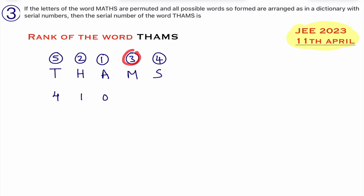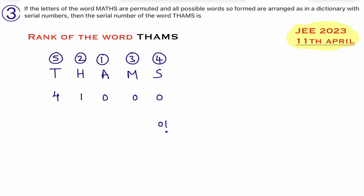For the letter with number 3, observe the right side — how many numbers are smaller than 3? No number is there, so write 0. For the letter with number 4, observe the right side — how many numbers are smaller than 4? No number is there, so write 0. After writing all these values, you get the sequence: 4, 1, 0, 0, 0.